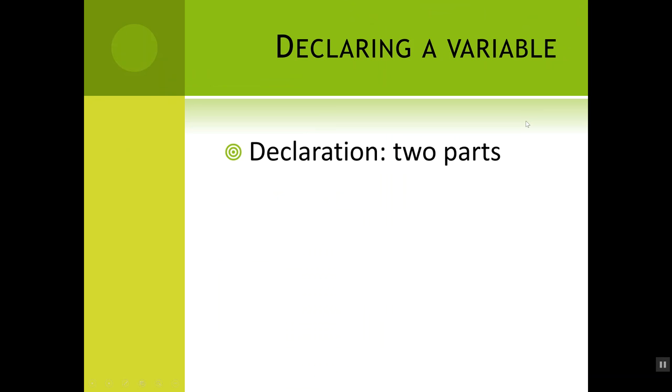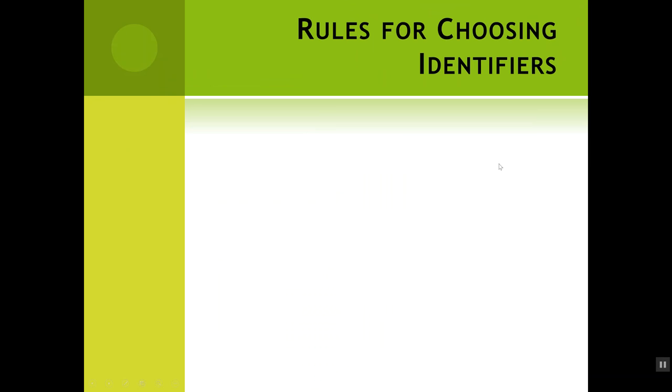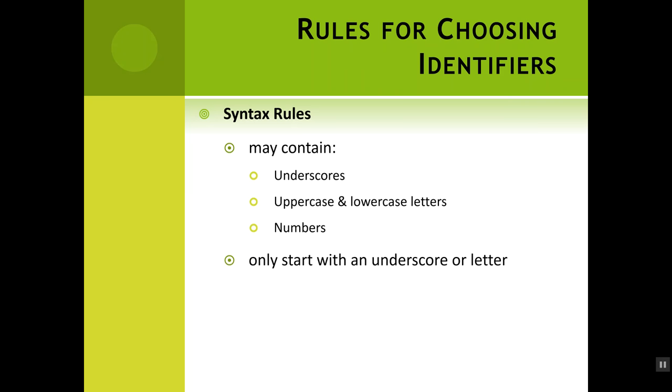Type is the first part, and the identifier that you choose is the second part of your variable names. There's rules for what you can name your variables. First are syntax rules, which means if you break these, your code won't run at all. Your identifiers can contain underscores, uppercase and lowercase letters, and numbers, but it can only start with an underscore or a letter. Starting with an underscore is super weird, so you're going to start with a letter. You can't use reserved keywords like main or int or return, and you're not allowed to have spaces.